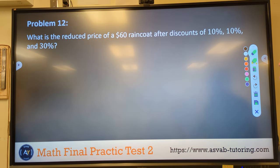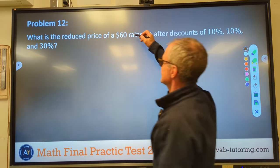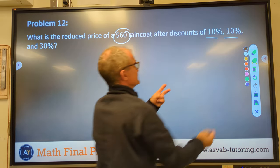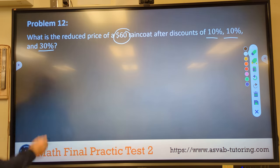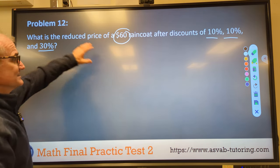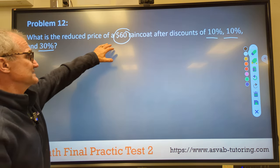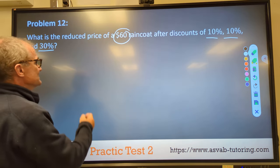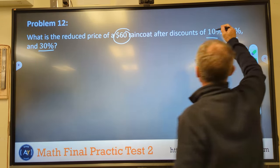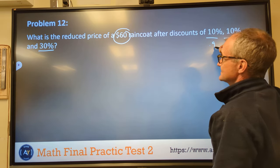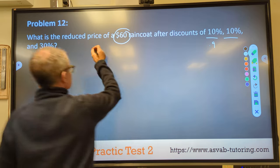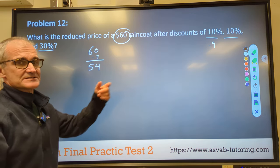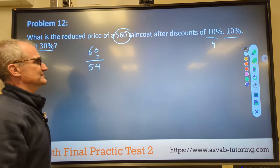Problem number 12, what is the reduced price of a $60 raincoat after it is discounted 10% of the new price, and then 10% of the new price, and then 30%. So it's a little bit of a trick. You certainly can't just take 50%, the sum of those percents, and take it off of here, because the 10% is off of the new price. So first thing I'm going to do is I'm going to take 100 minus 10 to get 90.